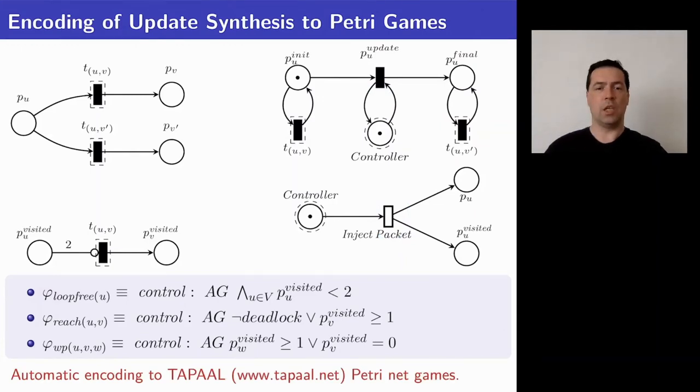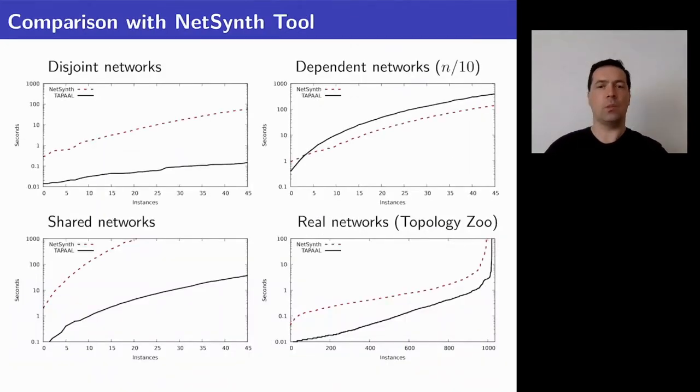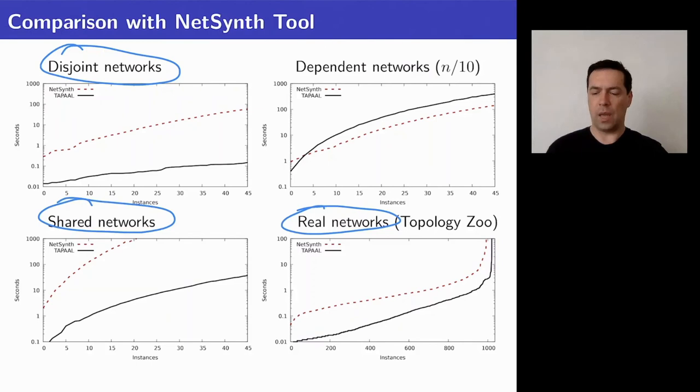This translation is implemented in a fully automatic toolchain that uses TAPAAL Petri Net games as the back-end engine and we compare the performance of our approach that uses TAPAAL and depicted as a solid line against the NetSynth tool depicted by the dashed line and we can observe that on three types of network topologies we are performing significantly better and on the dependent networks we are performing slightly worse than this state-of-the-art tool.